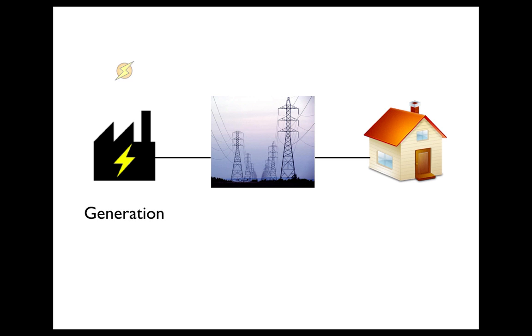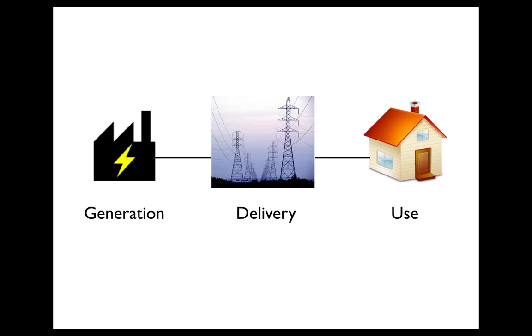The generation charge is the cost to you for buying the electricity, while the delivery charge is the cost for getting it from the power plant to your home.